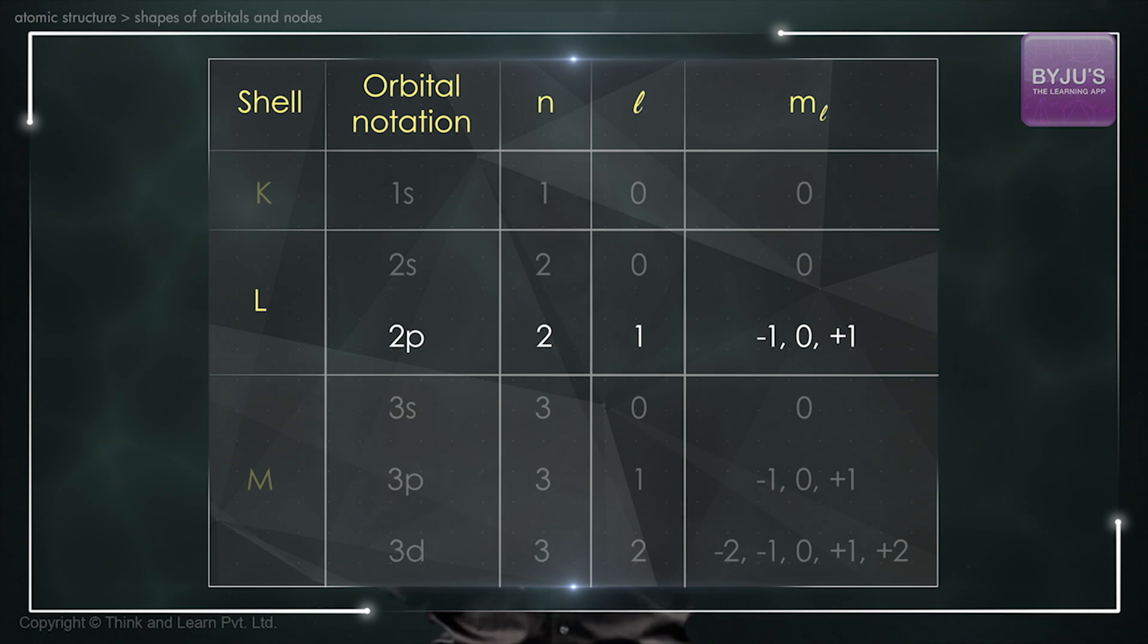As you can see, the different values of ml suggest that there are three different orbitals, each having a different orientation.